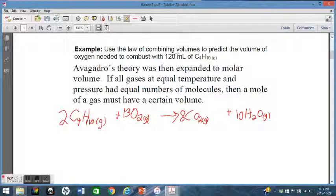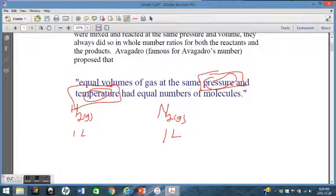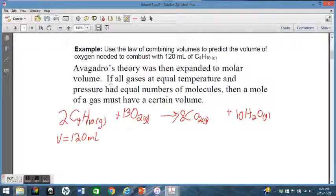Now, use the law of combining volumes to predict the volume of oxygen needed to combust 120 milliliters of C4H10. We have volume here. We do have to make an assumption. We have to assume that in order to make this work, the pressure and temperature is the same. If we're going to use the law of combining volumes, pressure and temperature have to be the same. So we can make that assumption, and then we look at this mole ratio. We need 13 moles of oxygen for every 2 moles of C4H10. That would apply to volume. C4H10, which is by the way butane.